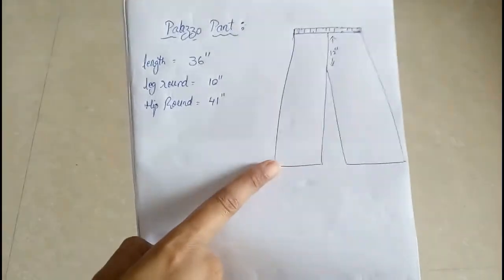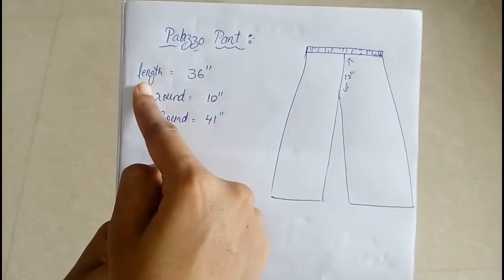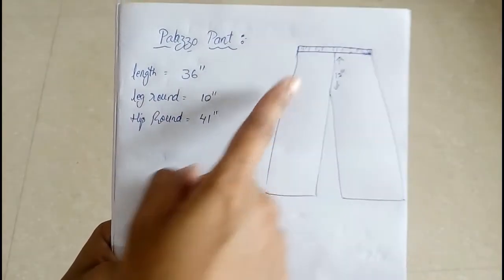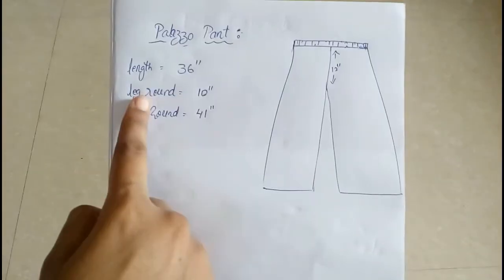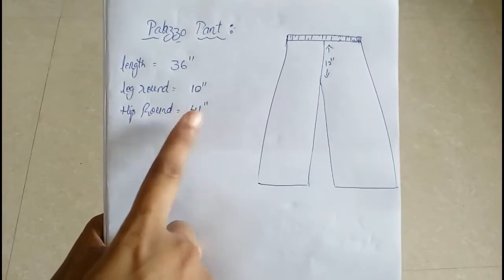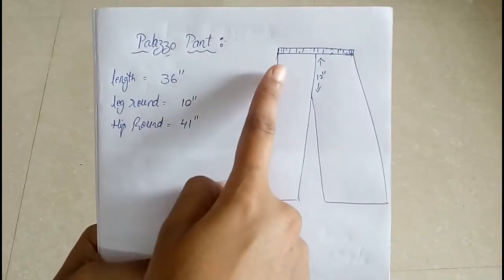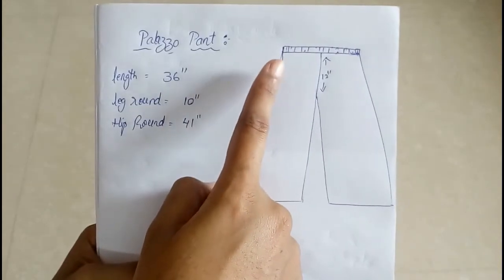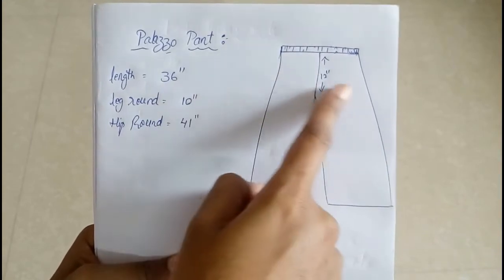We need three measurements to make these palazzo pants. First one is the length from the waist to toe. Next is leg round, that is how wide you want it to be. Then it is hip round. Because we are going to use an elastic, don't take the waist measurement. You have to take the hip measurement.